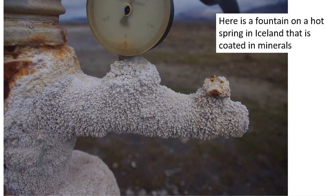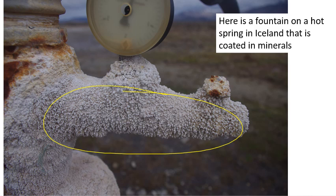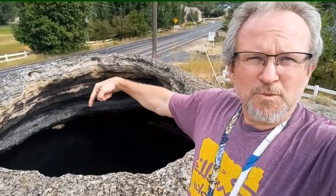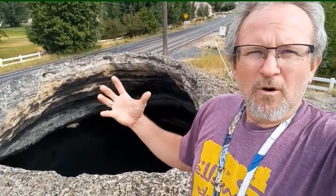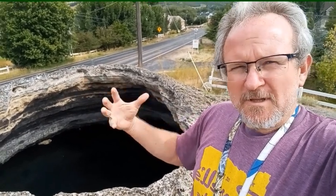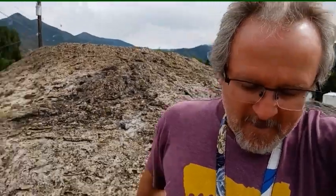Here's a fountain at a hot spring in Iceland, coated with minerals over time. Hot water comes up out of the ground bringing lots of minerals with it, but when the water reaches the surface and cools down, the minerals get deposited and you wind up with large piles of minerals around hot springs. Over time these minerals pile up and form what appears to be almost a miniature volcano. Thousands of years later, this particular hot spring doesn't have quite as much water anymore, but this mound is a good example of how minerals get brought to the surface and dropped by hot springs.